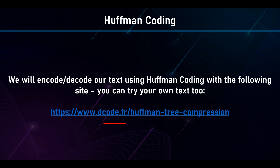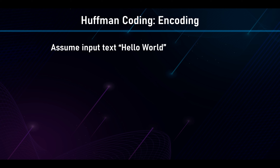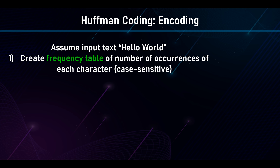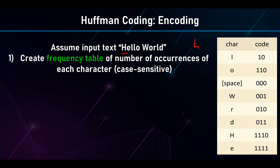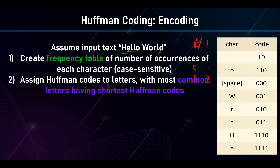You can practice on a Huffman coding website. For 'Hello World', step one is to create a frequency table of occurrences of each character — this is case sensitive, so uppercase H is different from lowercase h. Capital H occurs once, lowercase e occurs once, lowercase l occurs three times. Then we assign Huffman codes to letters, with the most common characters getting the shortest Huffman codes.